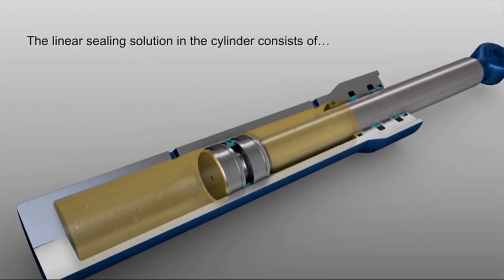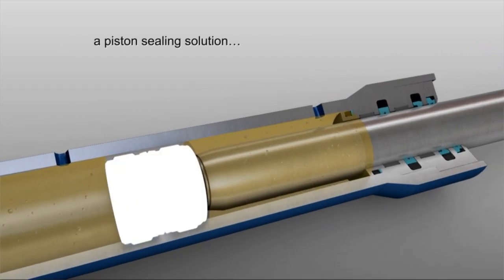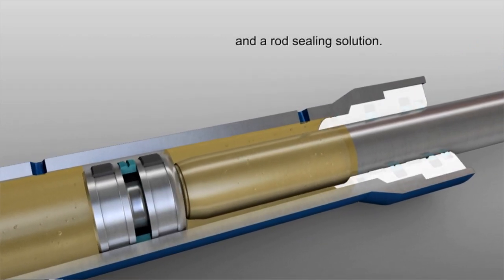The cylinder's linear sealing configuration consists of a piston sealing solution and a rod sealing solution.